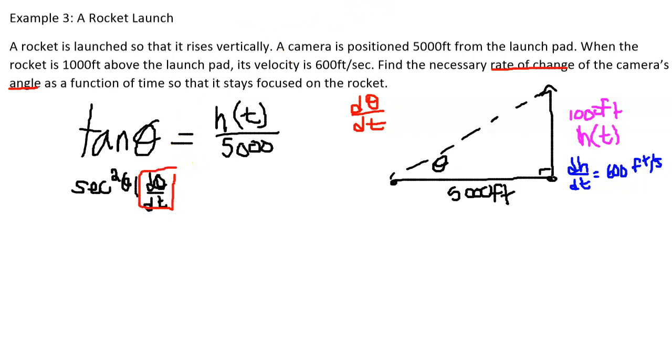And then on the right hand side, this is not a quotient rule because the 5000 is a constant. So we're just going to find the derivative and it'll still be over 5000.